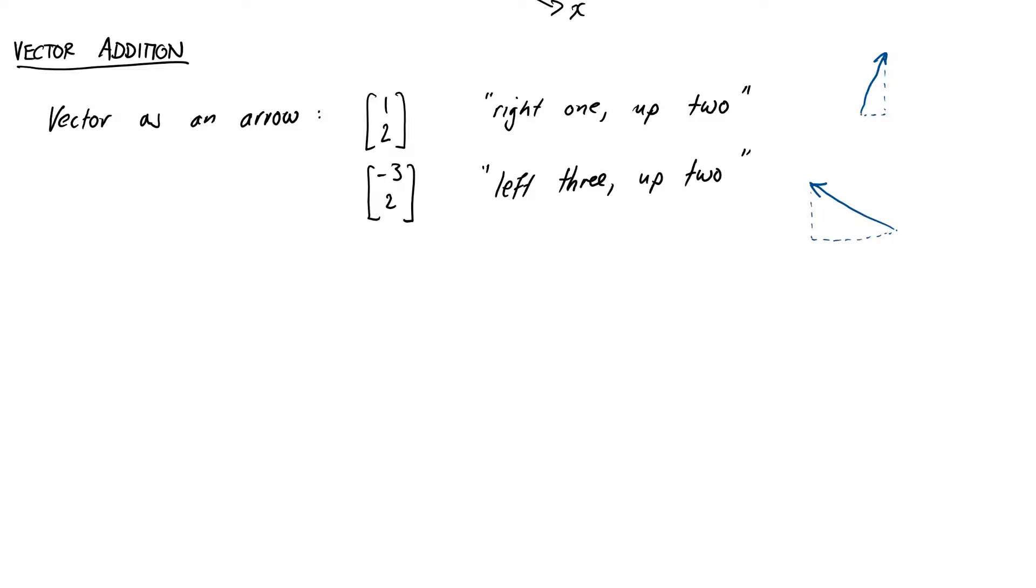So, how about we define our vector addition to be what we get if we do these two operations in succession, i.e. we'll define the vector 1, 2 plus minus 3, 2 to be go right 1, up 2, then left 3 and up 2. Which overall is go left 2 and up 4, or minus 2, 4.